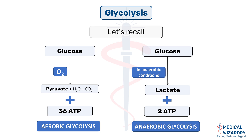Some smaller organisms like yeast, which are also capable of functioning under anaerobic conditions, convert pyruvate to alcohol and CO2, in addition to energy.